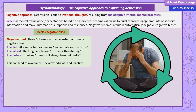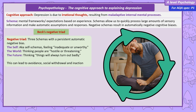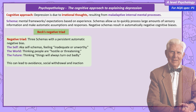For example, an individual with depression might avoid social situations because they believe they'll be rejected or ridiculed. They might also withdraw from activities they once enjoyed, such as hobbies or exercise, because they believe they're incapable of doing well. Finally, they might be unable to make decisions or take action because they believe that nothing they do will make a difference. These negative schemas often develop in childhood, but they provide a framework for persistent biases in adulthood, leading us to perceive the world inaccurately.